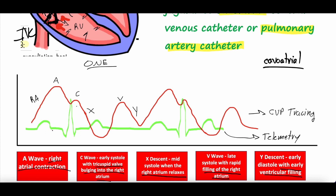Looking at the telemetry strip alongside the CVP tracing: the P wave represents atrial contraction — it lines up with the A wave, when the right atrium is contracting. The QRS complex is ventricular contraction, which bulges the tricuspid valve into the C wave. The atrium is still relaxing through the X descent. The T wave represents ventricular relaxation — that's when the atrium is still filling with blood, corresponding to the V wave. Then the valve opens for the Y wave, and the A wave starts again.